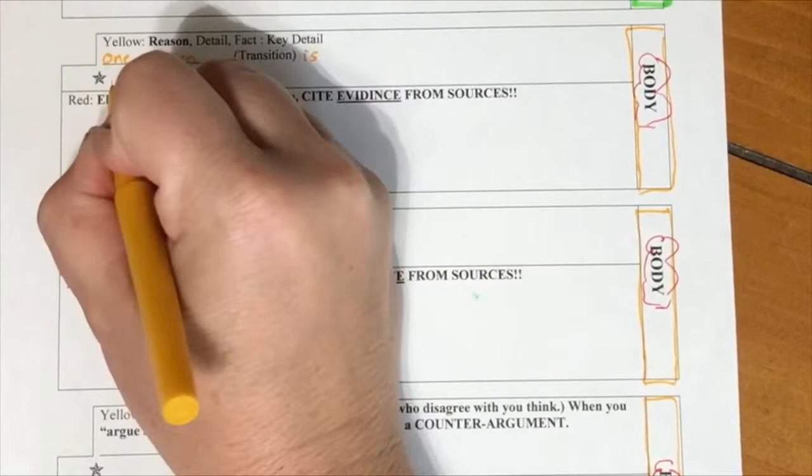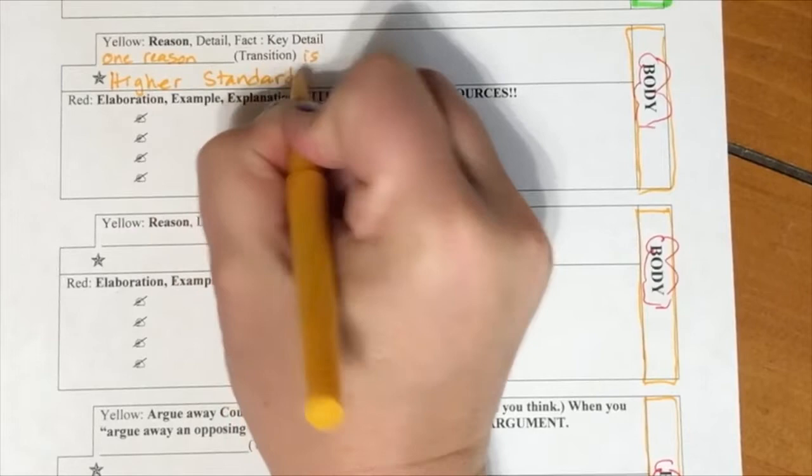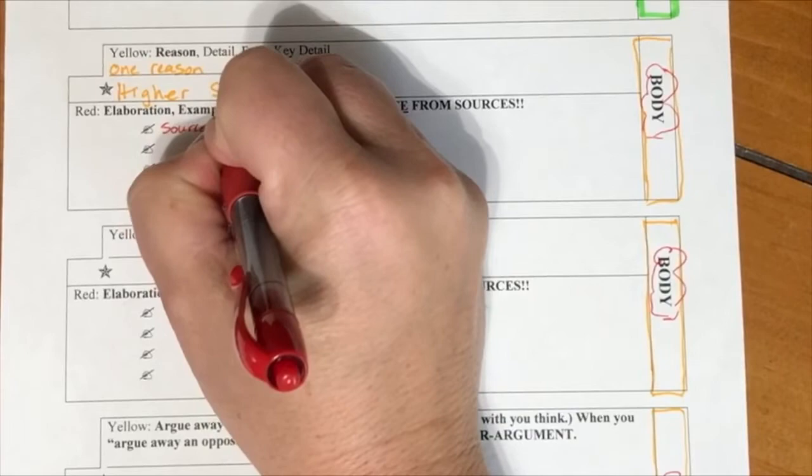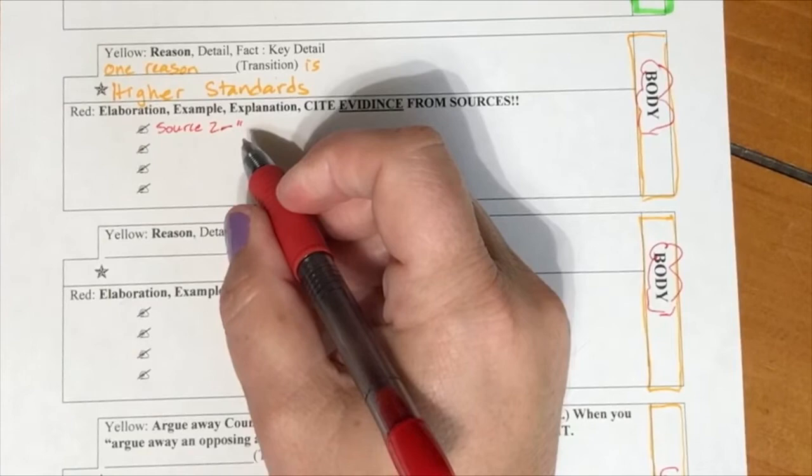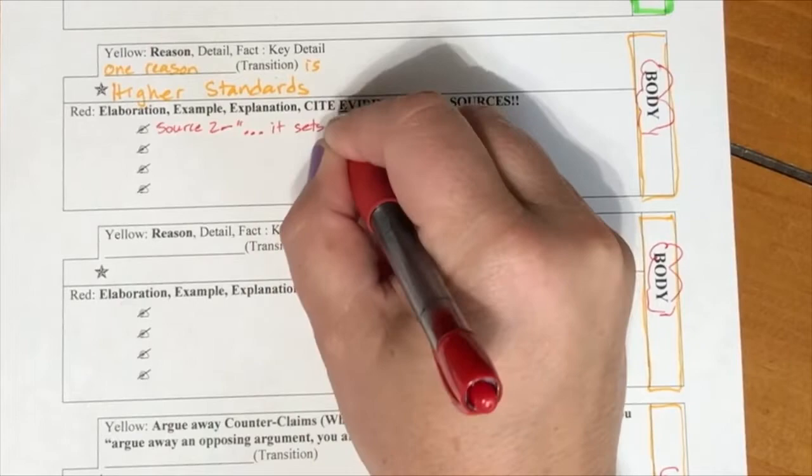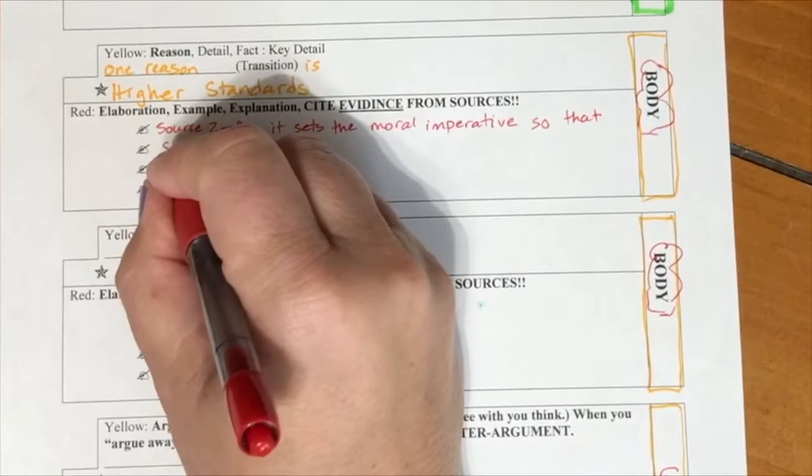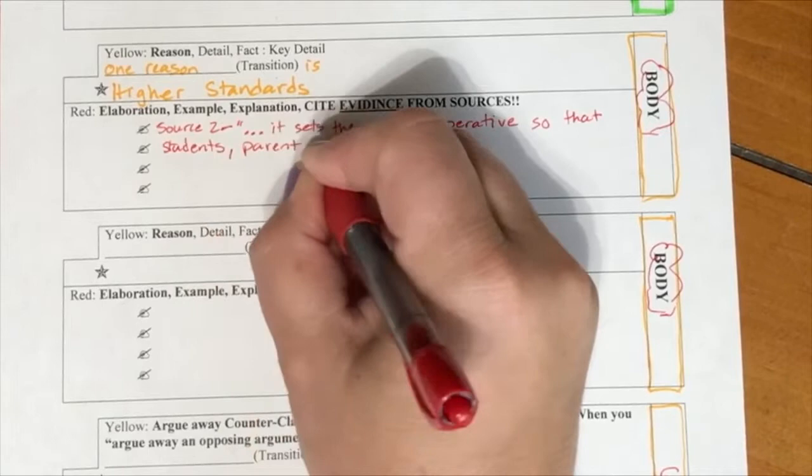One reason might be that it sets higher standards for students and parents. This reason is talked a lot about in source two. In source two, it stated it really clearly, this idea of higher standards. You can put it in quotes with ellipses. It says it sets the moral imperative so that students, parents and educators become committed to the idea that each student will, in fact, graduate. In your outline, this is where you can put some of the evidence and information that you gathered to help support your reason.